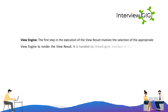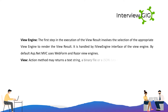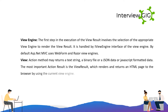View Engine: the first step in the execution of the view result involves the selection of the appropriate view engine to render the view result. It is handled by the iViewEngine interface. By default, ASP.Net MVC uses Web Form and Razor view engines. View: the action method may return a text string, a binary file, JSON data, or JavaScript-formatted data. The most important action result is the view result, which renders and returns an HTML page to the browser using the current view engine.